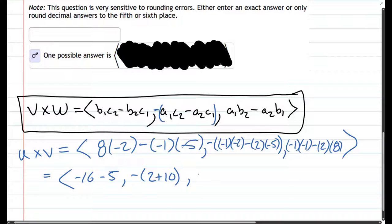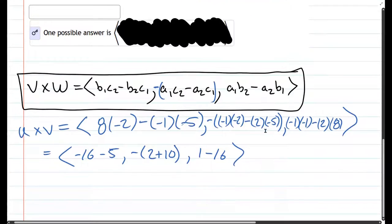Last coordinate: negative 1 times negative 1 is positive 1, minus 2 times 8 is 16. Alright, just perform these operations. That is negative 16 minus 5 is negative 21, negative 12, negative 15. Alright, so this should be perpendicular to u and v.